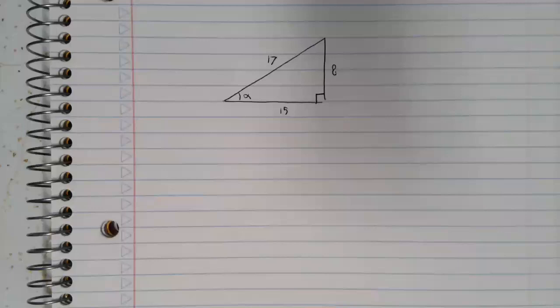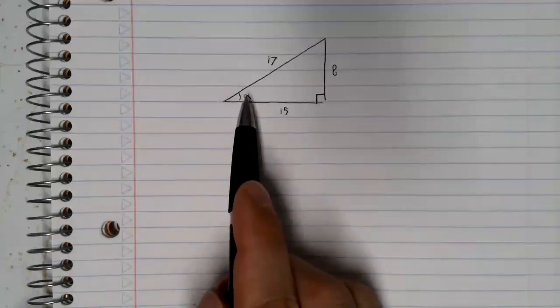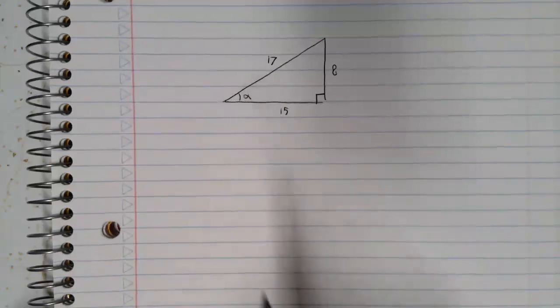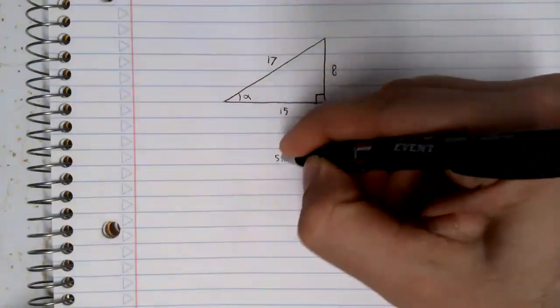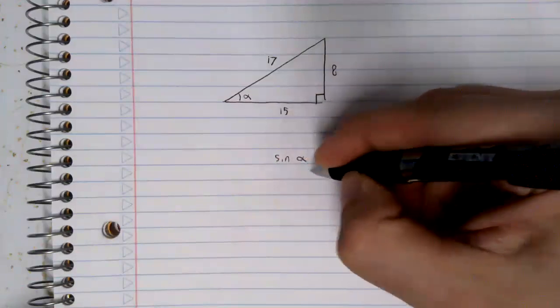Let's say we have a right triangle. It looks like this. We have our angle alpha here. We don't know what alpha is, like how many degrees it is, or how many radians it is.